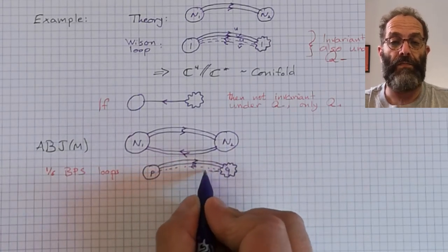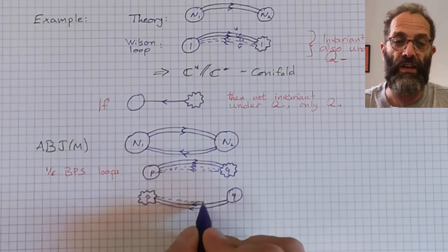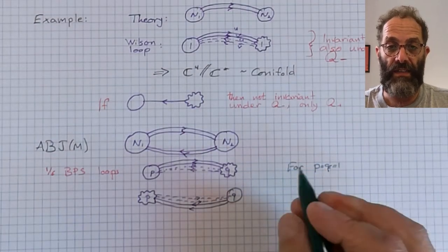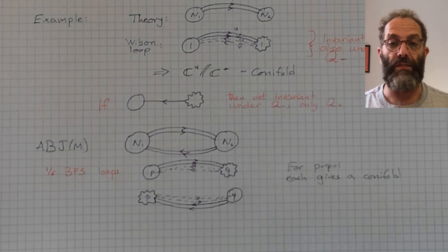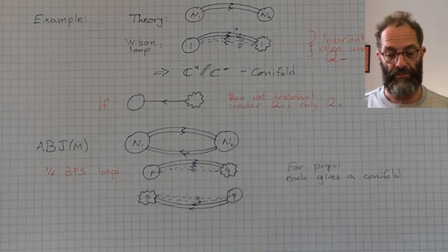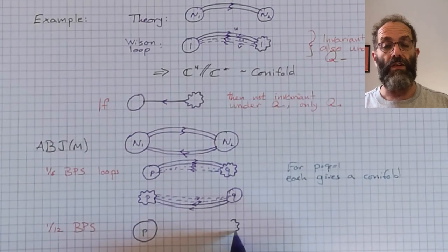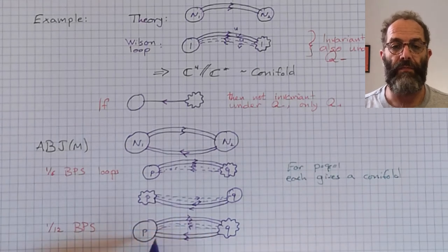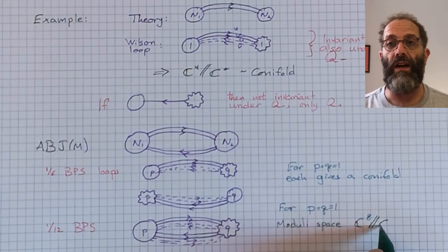And then if we look for the more supersymmetric Wilson loops that preserve two supercharges, which in the context of ABJM means one sixth BPS, and if p is equal to q equal to one, this is essentially the same story as above. It's a conifold. Of course, if p and q are larger, we can also calculate it, and the moduli space is a more complicated manifold. If we include the coupling to all the chiral fields and anti-chiral fields, then we find a Wilson loop that is invariant only under a single supercharge, that means it's 1/12 BPS in ABJM counting. And in the example when p equals q equals one, we have eight parameters modded out by one gauge symmetry. So we find the manifold C8 modded by C star.